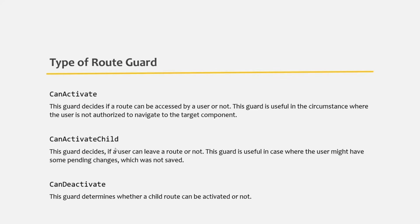We have learned how to configure our routes and navigate to different parts of our application using Angular routes. But allowing the user to navigate to all parts of our application is not a good idea. We need to restrict the user from accessing certain routes until the user performs a specific action, like logging into the application. We can use CanActivate or CanActivateChild route guard for protecting a route from unauthorized access.